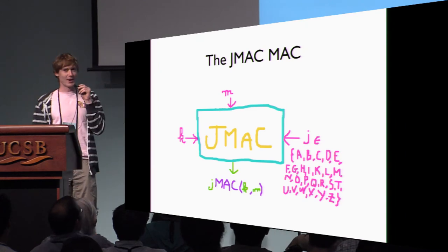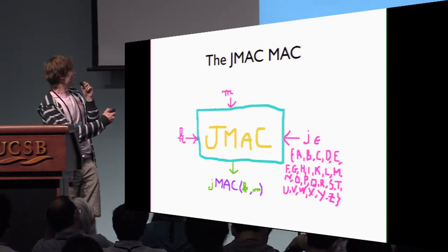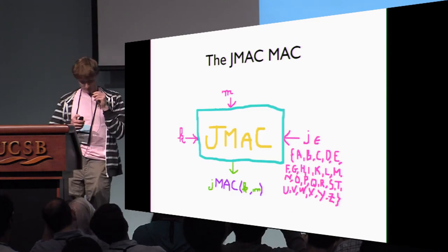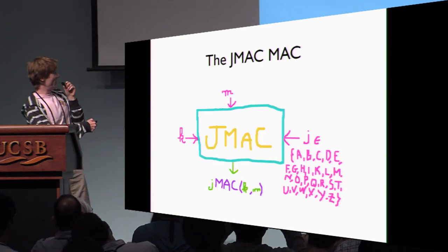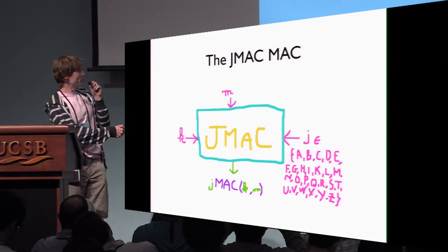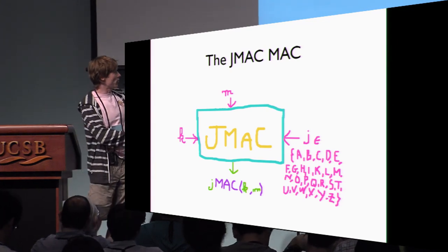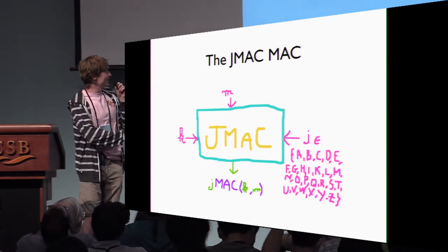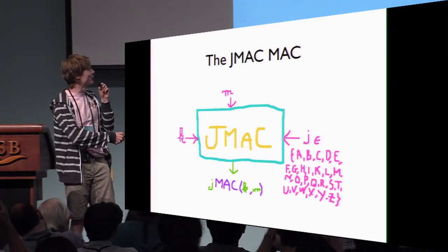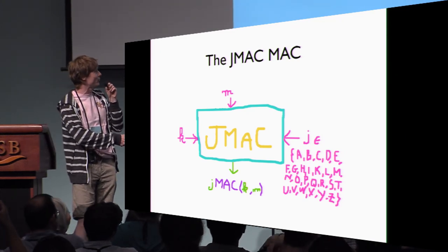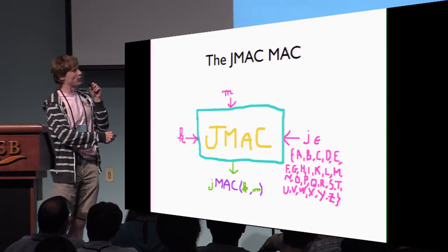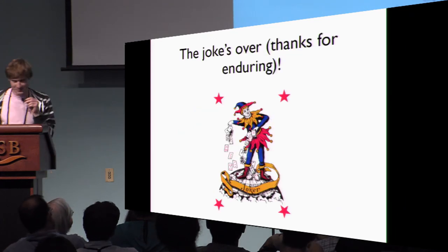So JMAC takes three inputs. One input is the key K. Another input is the message M. The third input is the letter J, which is either of A, B, C, D, E, F, G, H, I, K, L, M, N, O, P, Q, S, T, U, V, W, X, Y, Z. And then JMAC of K, M, J is JMAC of K, M. Thank you.